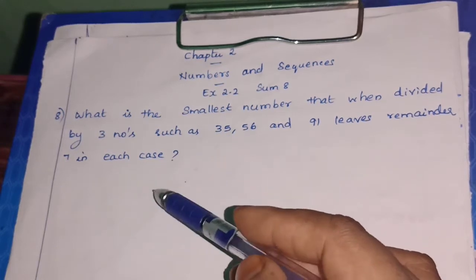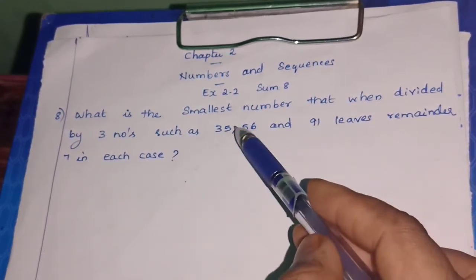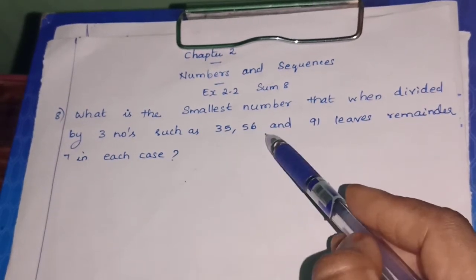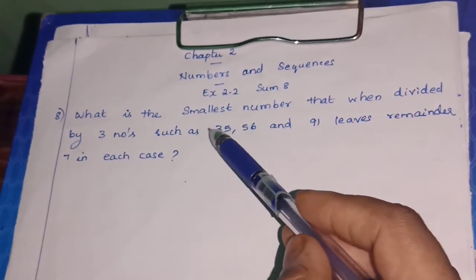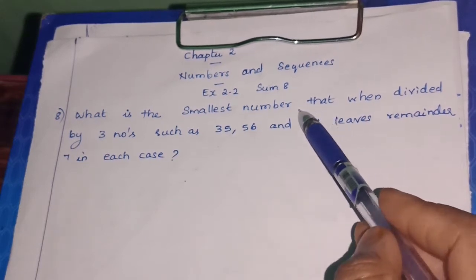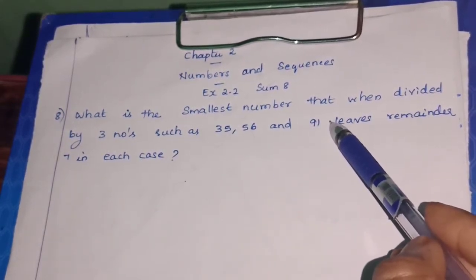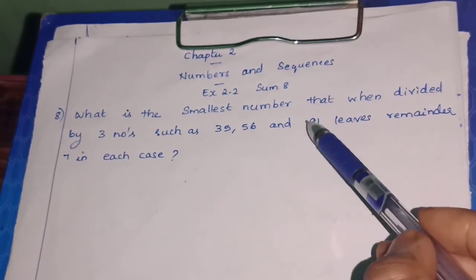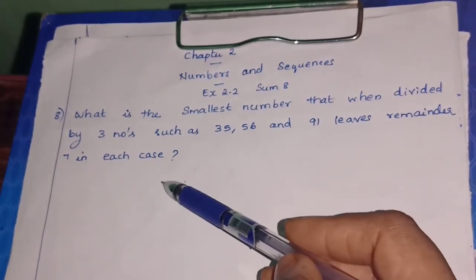As we did in the previous sum, when a group of numbers is given, the main representative for this group will be the LCM. So for 35, 56, and 91, instead of dividing one by one, we take the least common multiple of these 3 numbers, then check whether it is exactly divisible or leaves a remainder.